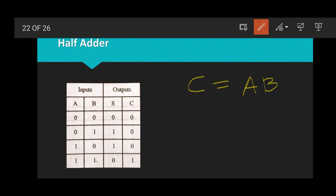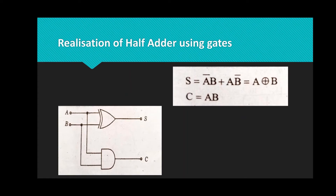The XOR gate output is 1 when inputs differ. So the sum S = A XOR B, which is the formula A̅B + AB̅. For the realization of the half adder using gates: A and B inputs go through an XOR gate and the output is SUM. Then A into B through an AND gate gives the carry output C. So this is the half adder gate representation.